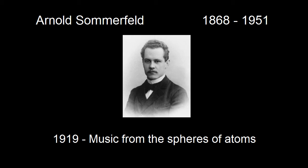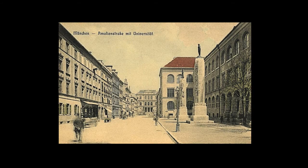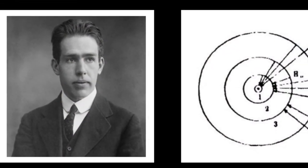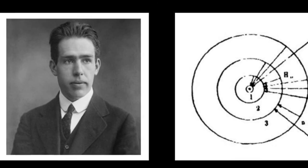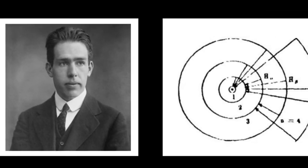In September 1919, Arnold Sommerfeld published a classic textbook, Atombau und Spectralinien. In the book, Sommerfeld, from the University of Munich, described fascinating insights into atomic structure, which followed on from a famous paper by Niels Bohr, who, in 1913, had first suggested that electrons in atoms can occupy only specific energy levels or orbits.